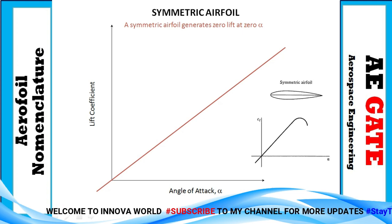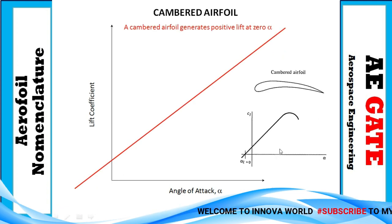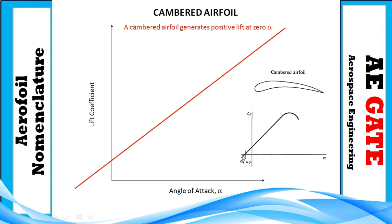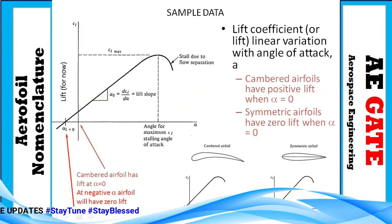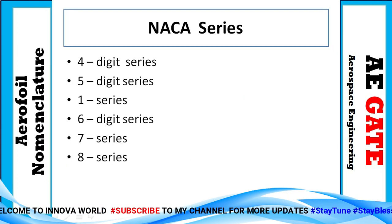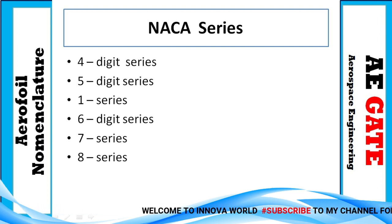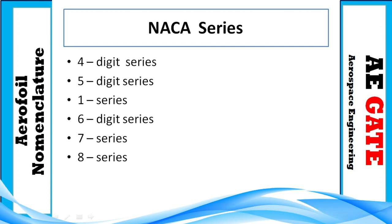In a cambered airfoil, at zero angle of attack there is some positive lift. This is the key difference between a cambered and symmetric airfoil. Now coming to NACA series — there are several types: four-digit, five-digit, one-series, six-digit series, seven-series, and eight-series. As per our syllabus, we focus on four-digit, five-digit, one-series, and six-series.